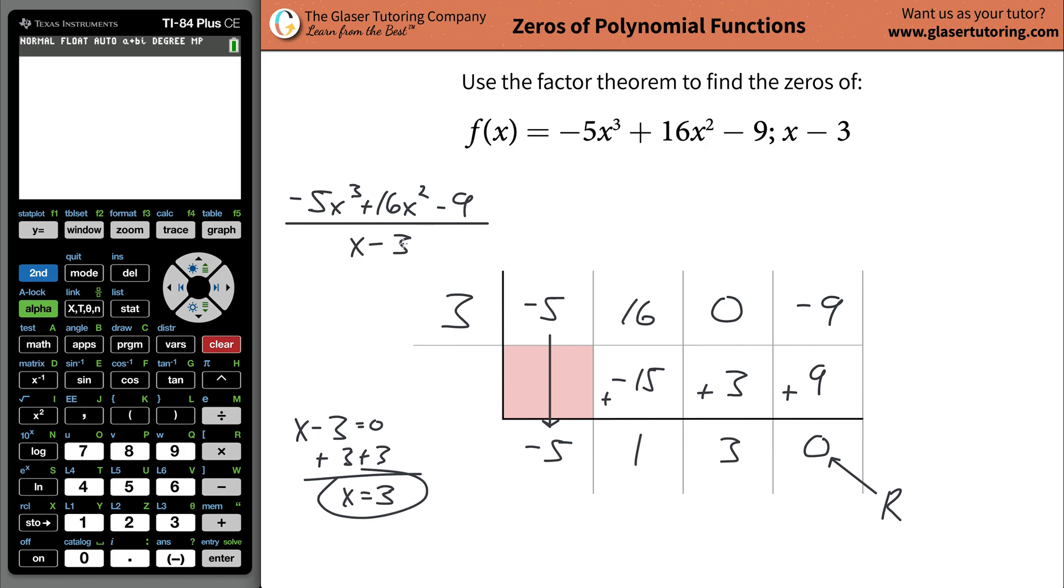Now, knowing that this is a factor, to find then the zeros from factors, we've done a ton of these problems. To find zeros from factors, what you do is you take that factor, x minus 3, and you set it equal to 0. Solve that for x, and whatever x is equal to will be your 0. So that's basically the same thing that we did already over here.